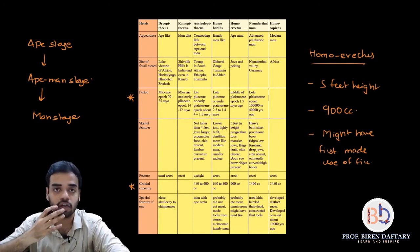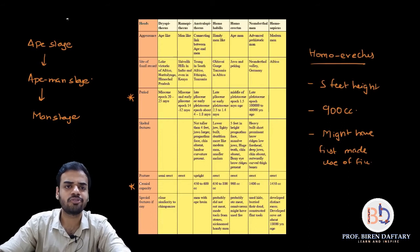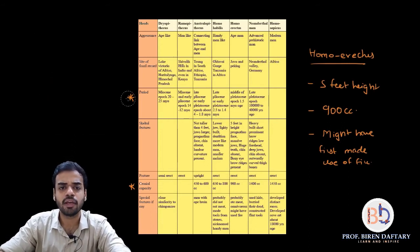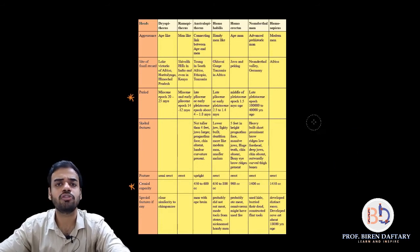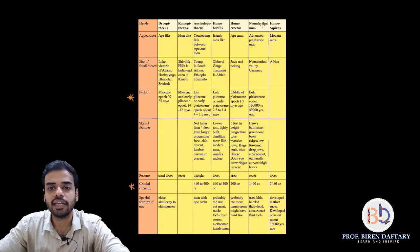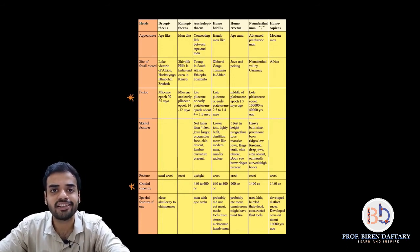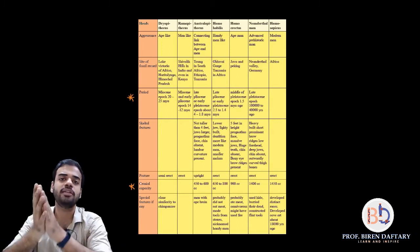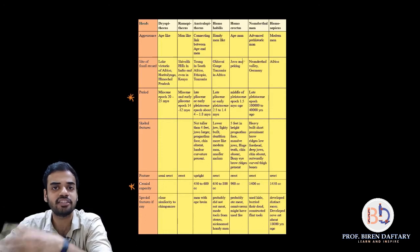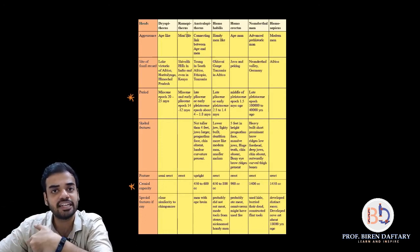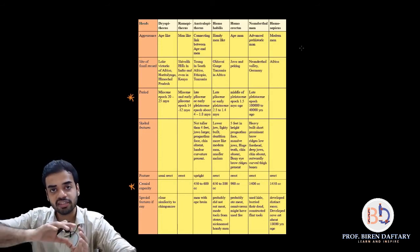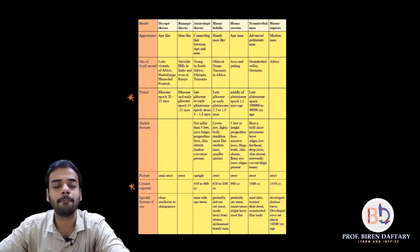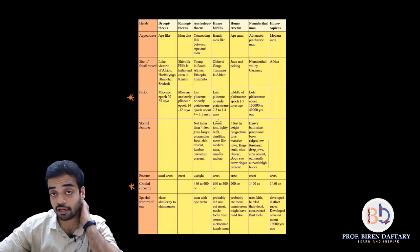The next stage is Neanderthal man — a very evolved, advanced prehistoric man, very similar to us. The fossil is found in Neanderthal Valley in Germany. The name itself gives the location hint. The period is late Pleistocene — having moved from middle Pleistocene for Homo erectus.